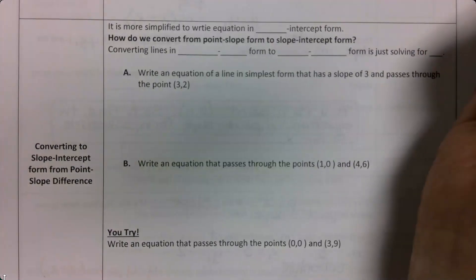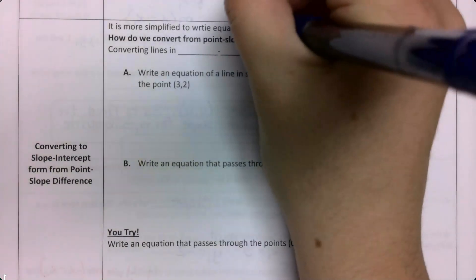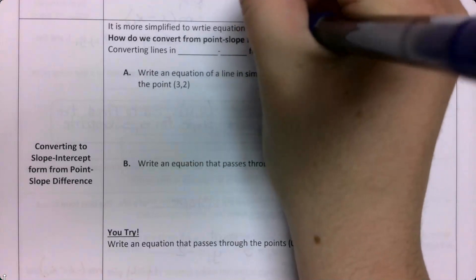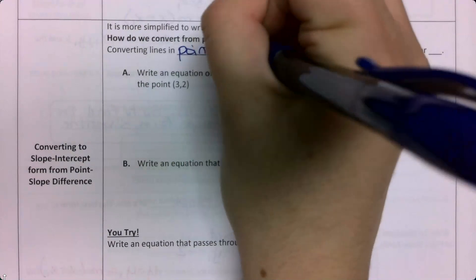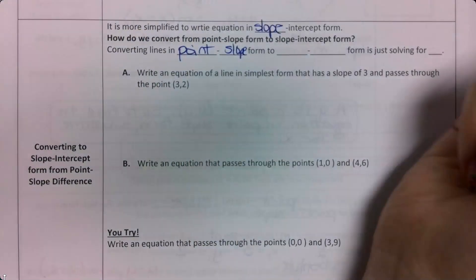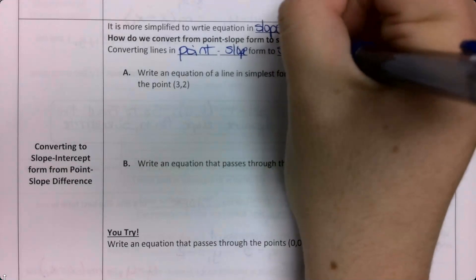It's more simplified to write the equation in slope-intercept form. We can convert from point-slope to slope-intercept. Converting from point-slope form to slope-intercept form is just solving for y.